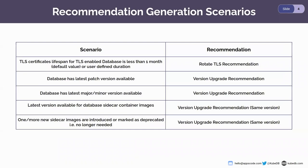Let's see the recommendation generation scenarios. The first scenario is about the TLS certificate lifespan for TLS-enabled databases. If the TLS certificate lifespan is less than one month — that is the default value, or a user-set custom value — the recommendation engine will generate a Rotate TLS recommendation.